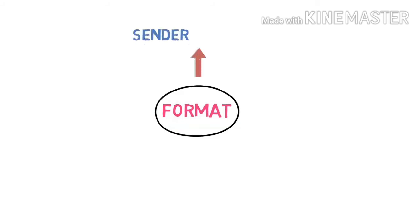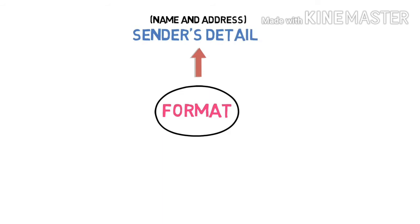First, what is the format? First is the sender's details. So sender's details mein kya likthe hai apan? Name and address — kiska? Sender ka. Jo letter liktha hai, uska name and address.